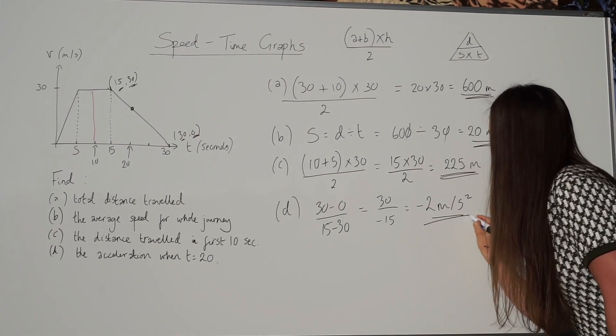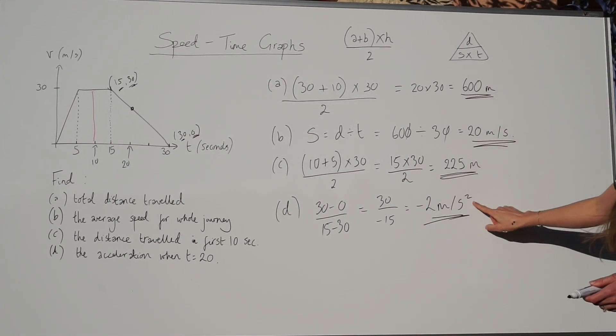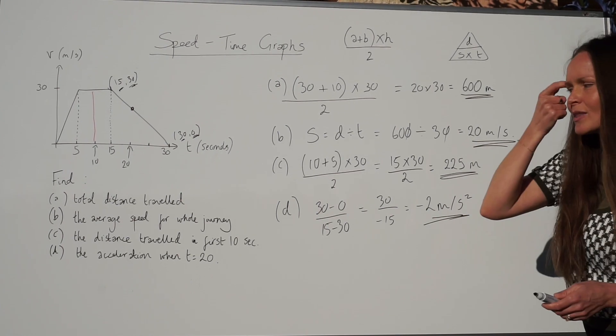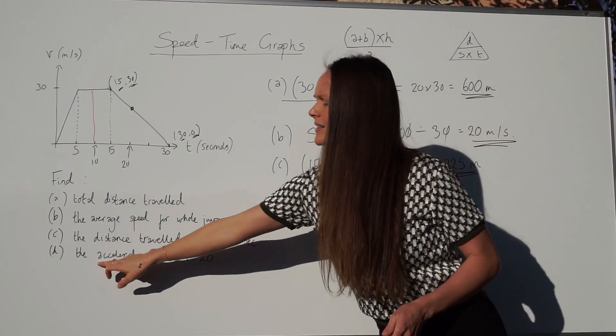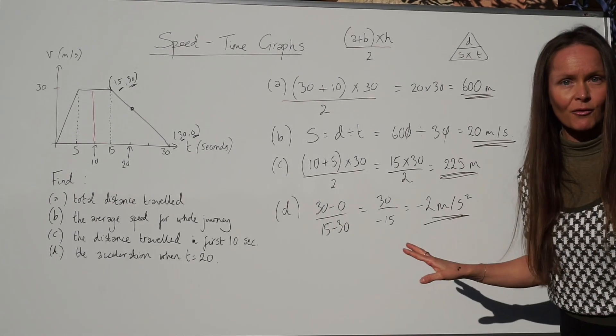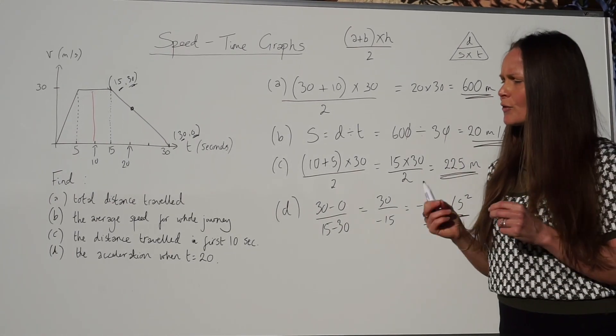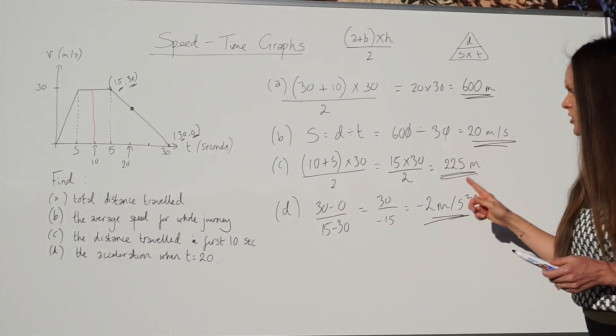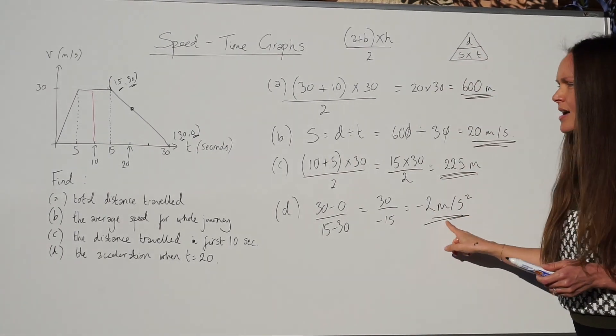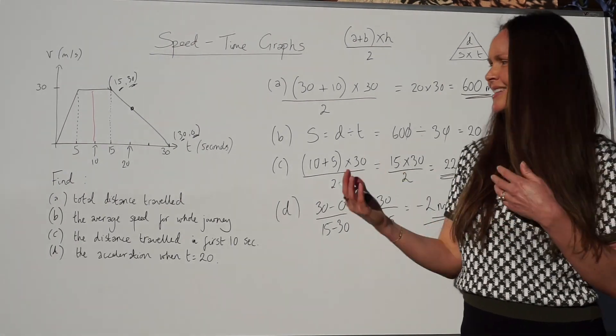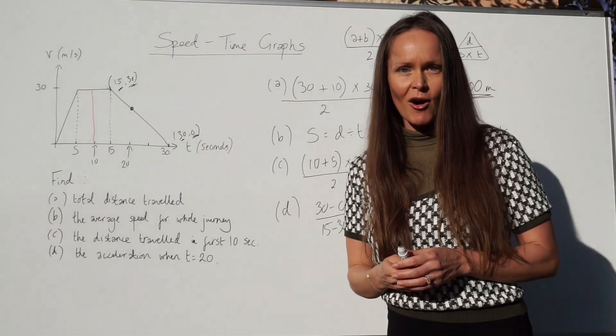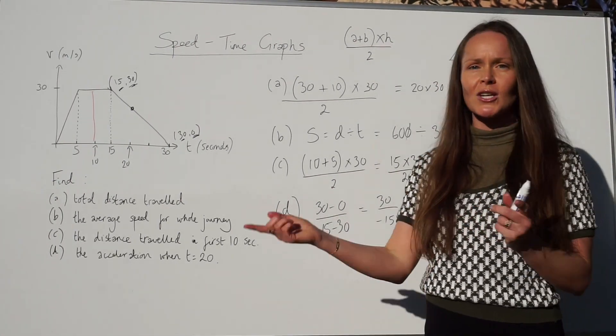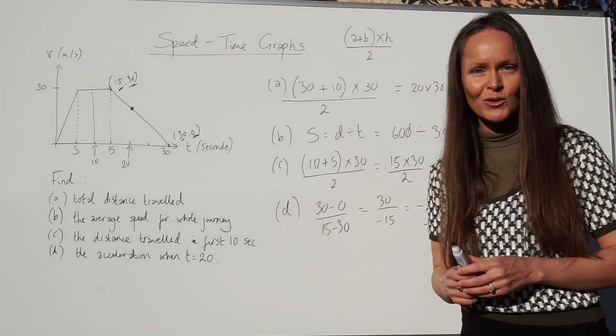So, the units for acceleration are meters per second squared. Notice how in the question it asks for acceleration. This is the acceleration. This is the final answer. However, if the question had asked for deceleration, you would need to change the sign of your answer. I hope that clears up some of your questions on speed time graphs. If you need some more practice, go check out my other lessons. I do have some more on speed time graphs.